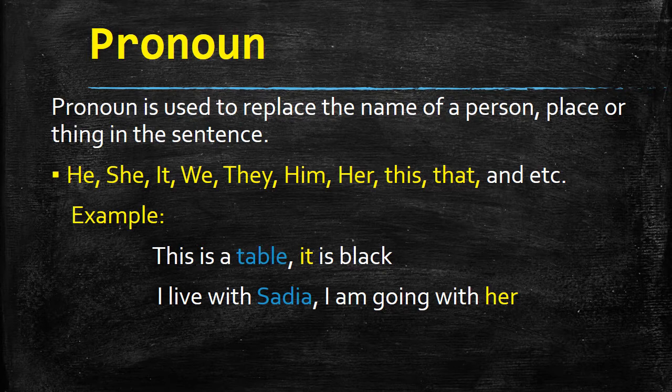For example, 'This is a table.' In this sentence, table is a noun, and for a further sentence, if we say 'It is black' — table ki jagah hum ne 'it' likha, so 'it' is called a pronoun. Another example: 'I live with Sadia.' Sadia is a noun. For the next sentence, 'I am going with her' — yahaan Sadia ki jagah 'her' istamal hua, to yeh pronoun kehlayega.